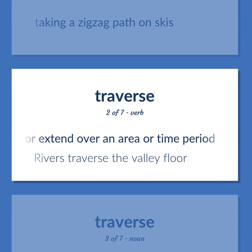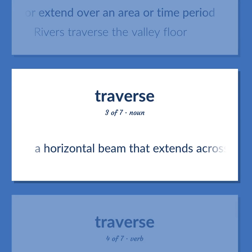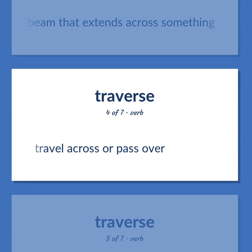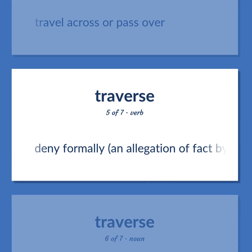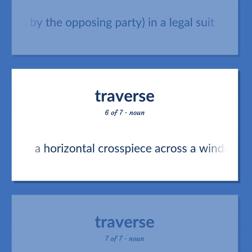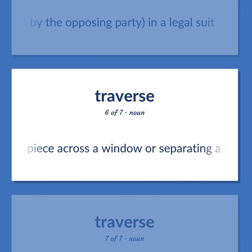Traverse: Rivers traverse the valley floor. A horizontal beam that extends across something. Travel across or pass over. Deny formally an allegation of fact by the opposing party in a legal suit. A horizontal cross piece across a window or separating a door from a window over it.